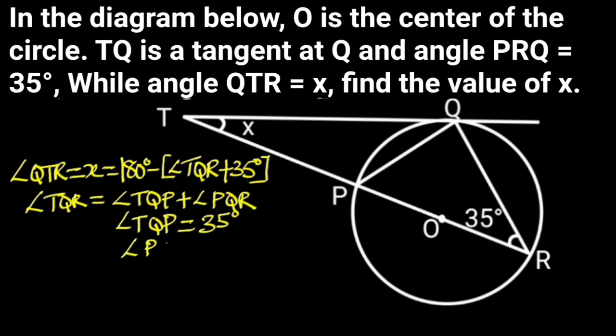Angle PQR equals 90 degrees. Reason: Angle in semicircle. Hence angle TQR equals 35 degrees plus 90 degrees, which is 125 degrees.